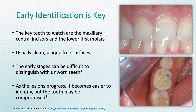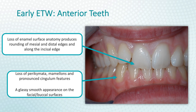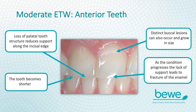Recording erosive tooth wear in every patient helps to stop severe levels of wear developing. Early signs of erosive tooth wear for anterior teeth may include loss of enamel surface anatomy, producing rounding of the mesial and distal edges and along the incisal edge, loss of enamel features such as mamelons, and a glassy smooth appearance on the facial buccal surface. As enamel destruction becomes more pronounced, there is more hard tissue destruction and it becomes easier for us to identify clinically. Typical signs of anterior teeth include loss of palatal structure, which can reduce the support along the incisal edge, and distinct buccal lesions that grow in size. As the condition progresses, the lack of support leads to fracture of the enamel and the teeth become shorter.